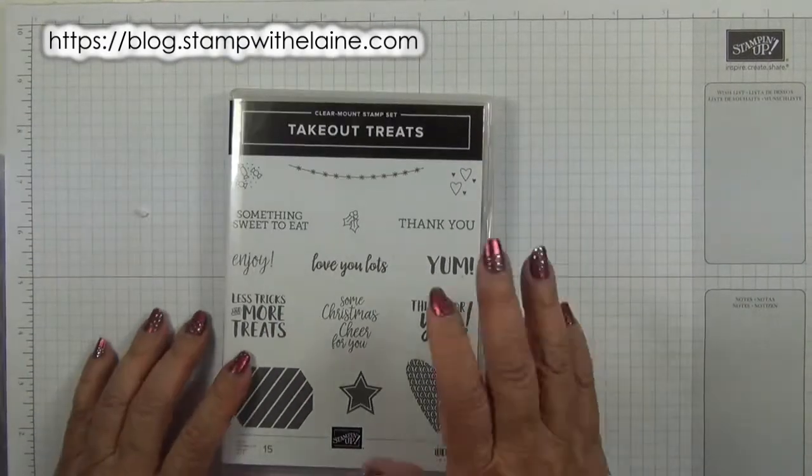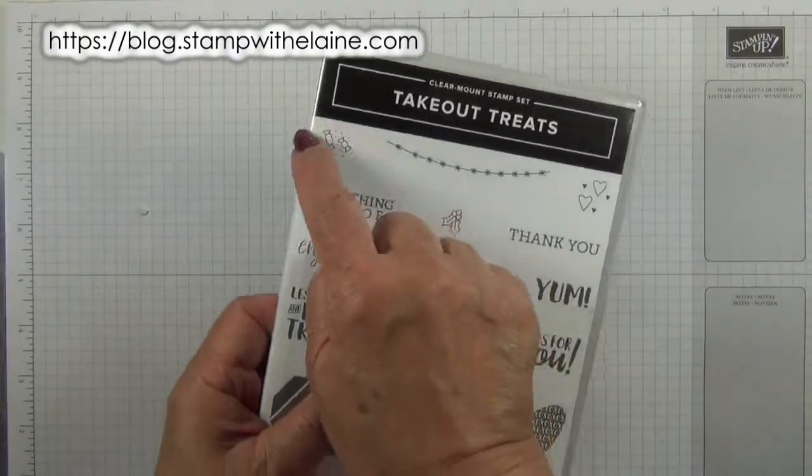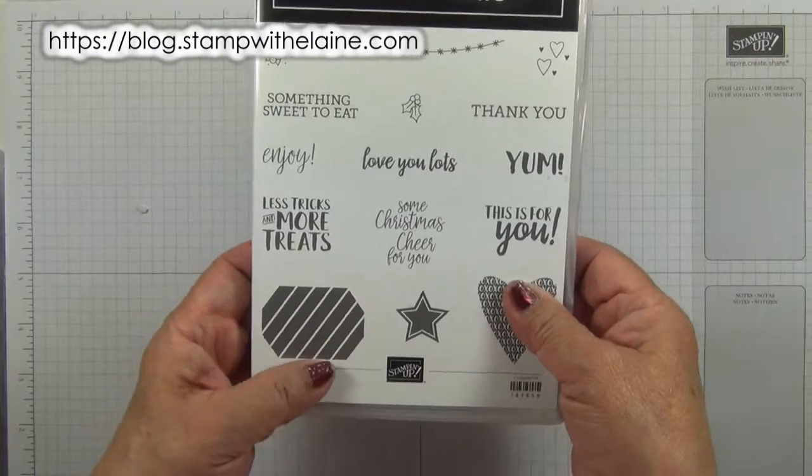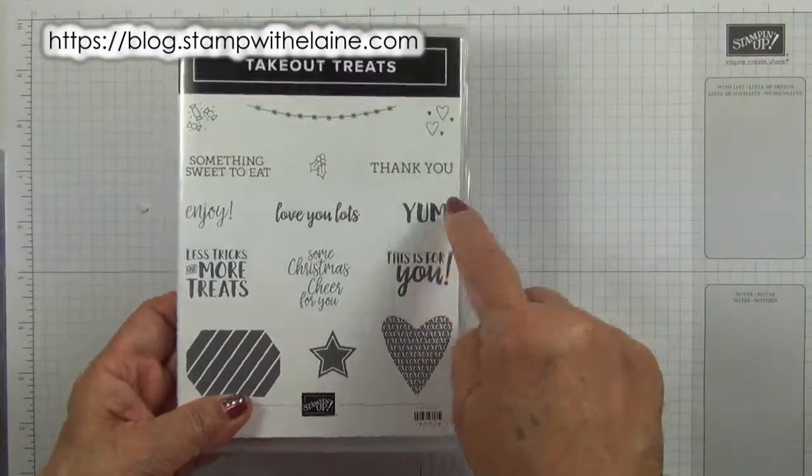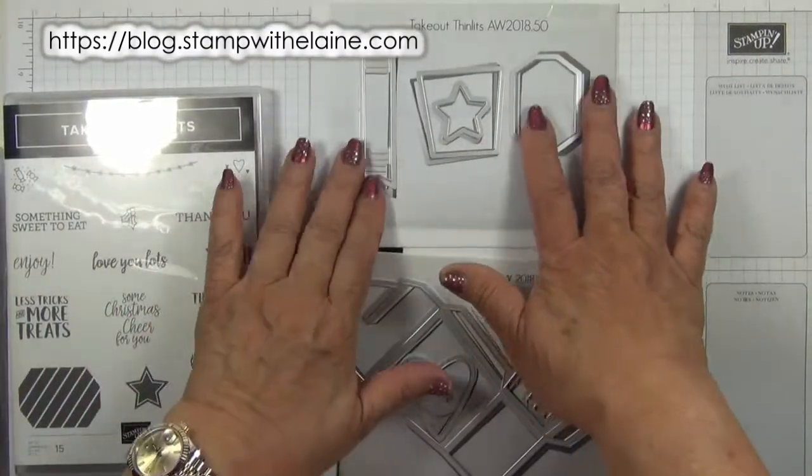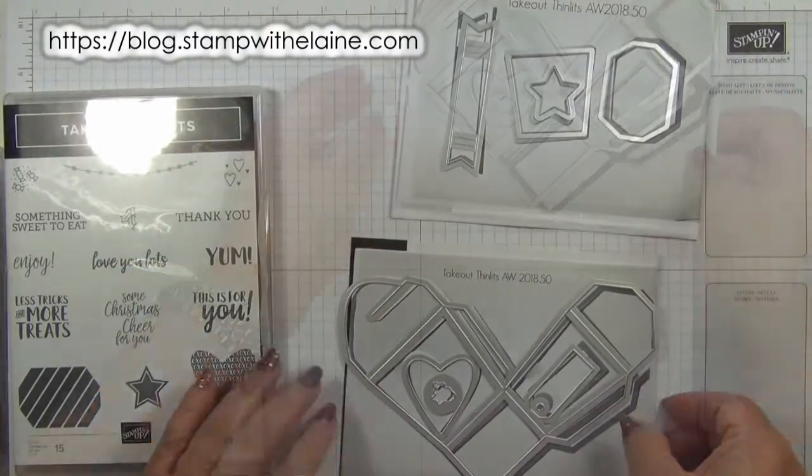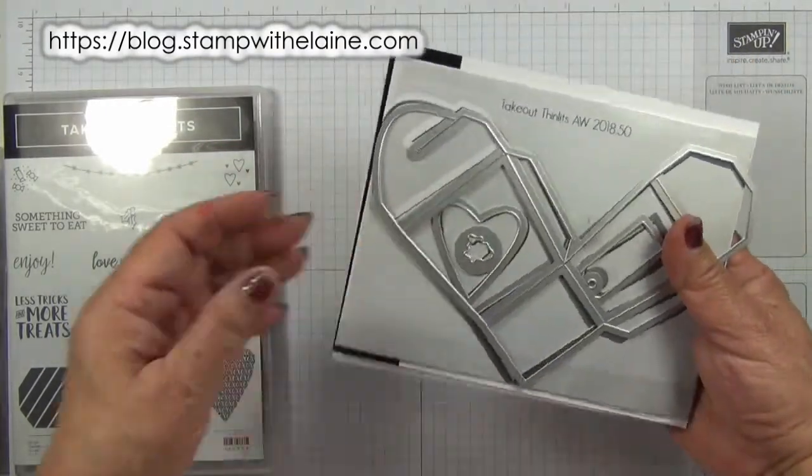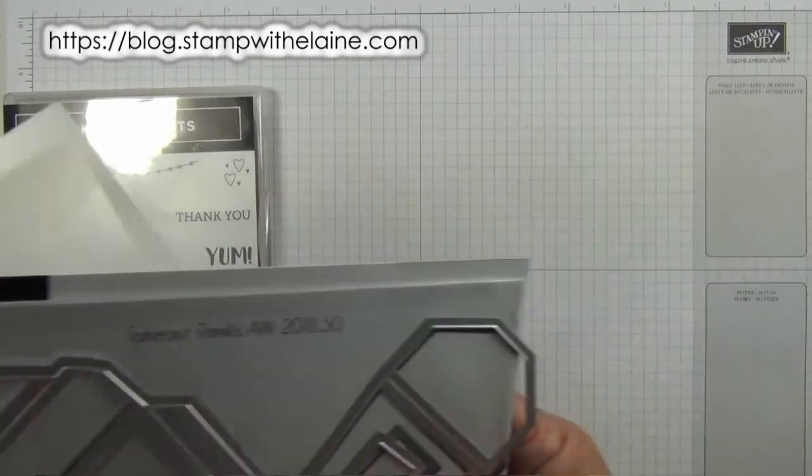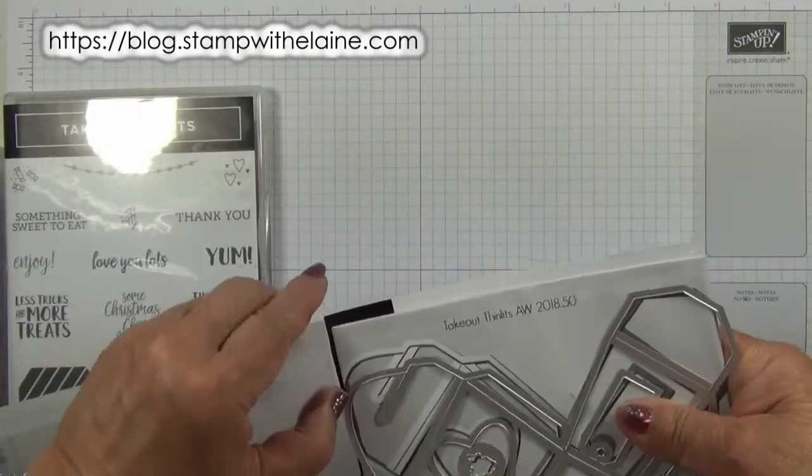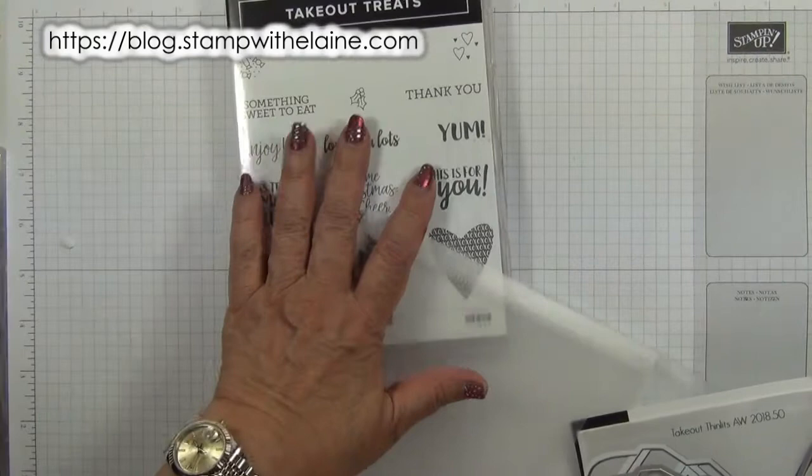The stamp set I'm using is Take Out Treats. I'm using this little image here and also this sentiment here. It also has a set of coordinating dies to make darling sweet treat boxes. I featured this in a previous video but for today we're only going to be using the stamp set.